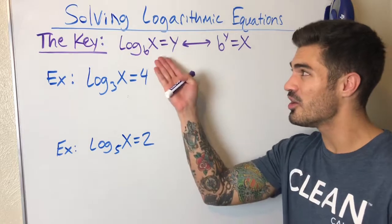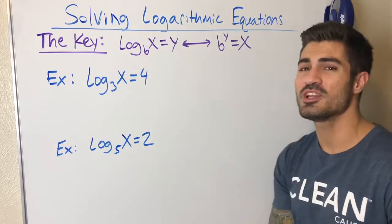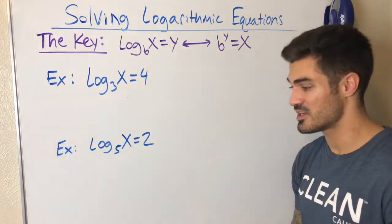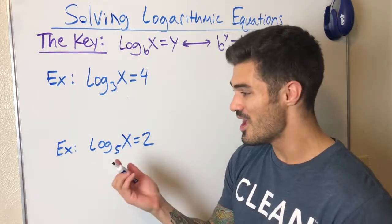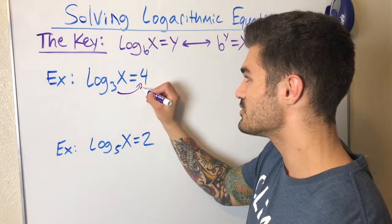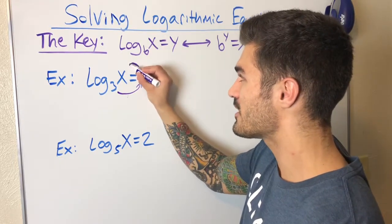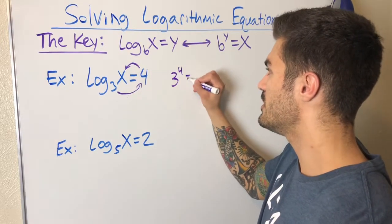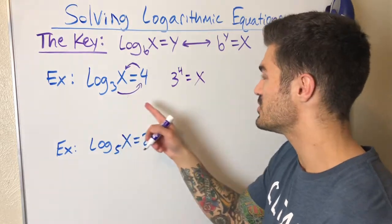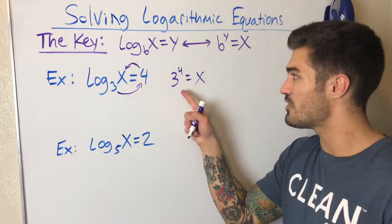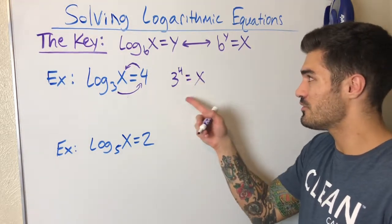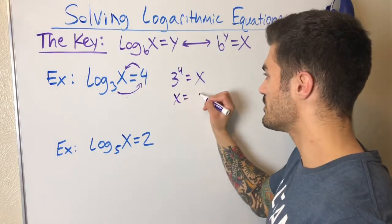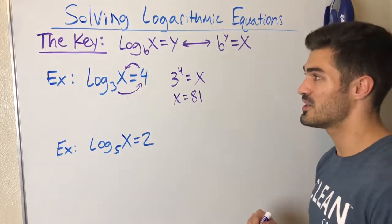The key to solving logarithmic equations is that we can rewrite a logarithmic equation as an exponential equation. This is how you'll solve almost all of these. I use a little arrow trick — I start with the base and draw an arrow to whatever it equals, then an arrow back to whatever's in the logarithm. So three to the fourth equals x. Three to the fourth is 81, so x equals 81.